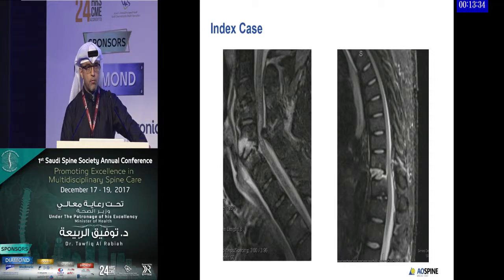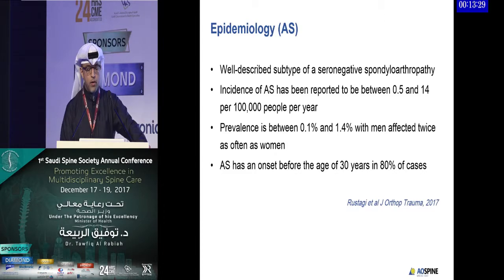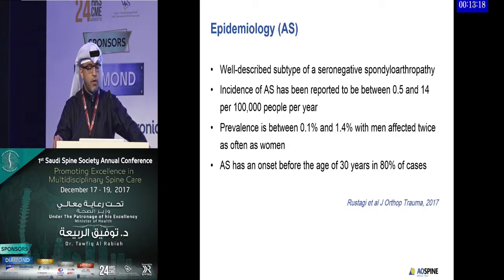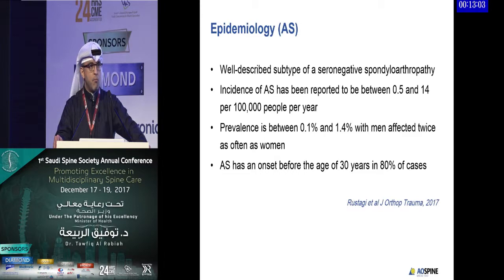We'll go into the surgical management for this patient later in the talk. The talk covers ankylosing spondylitis as well as DISH. Regarding epidemiology, ankylosing spondylitis is a well-described subtype of seronegative spondyloarthropathy. The incidence is reported to be between 0.5 and 14 per 100,000 people per year, with a prevalence of 0.1 to 1.4, predominantly in men.